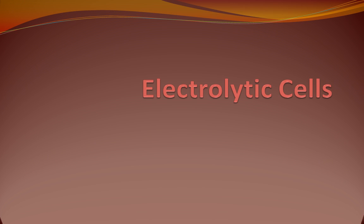Today we are going to talk about electrolytic cells. If you look at electrochemistry, there are two parts: electrochemical cells and electrolytic cells. In electrochemical cells, a chemical reaction produces electrical energy, and that is a spontaneous reaction. In electrolytic cells, the opposite is true — we use electrical energy to bring about a chemical reaction.